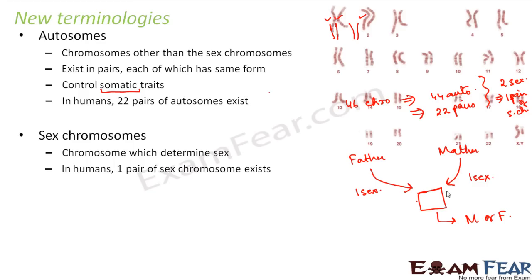In this picture you can see all 46 chromosomes in a human male. The numbered chromosomes — 1, 2, 3, 4, 5, and so on — are all autosomes. The last one, labelled XY, is the sex chromosome. So the sex chromosome in a male is denoted by XY.